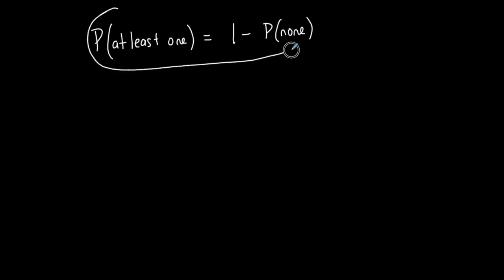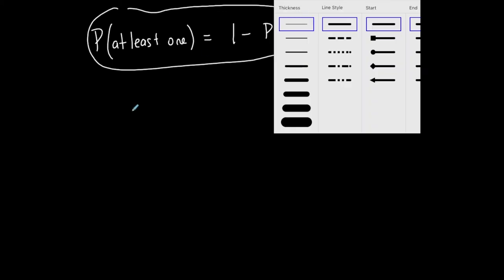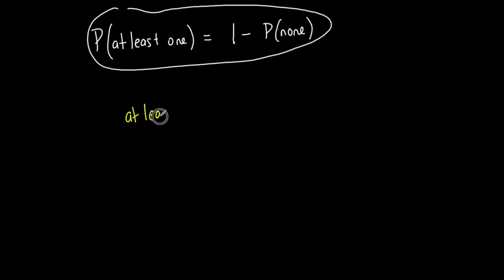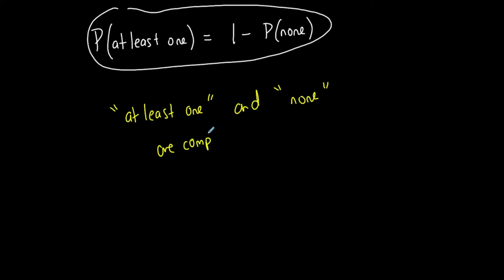Here's the formula: the probability of at least one equals one minus the probability of none. This is because 'at least one' and 'none' are complementary events — they add up to one.